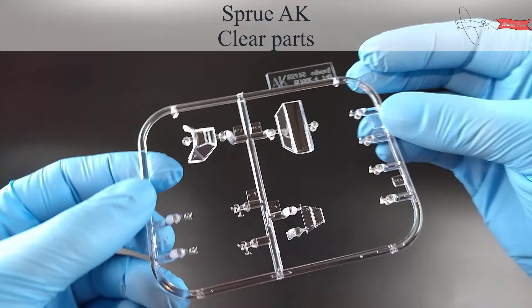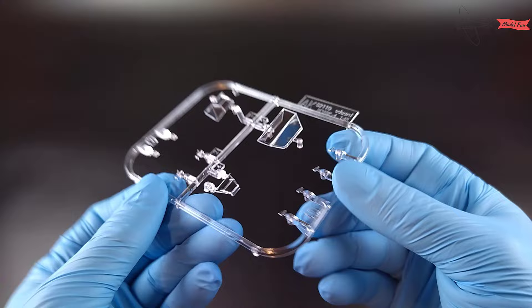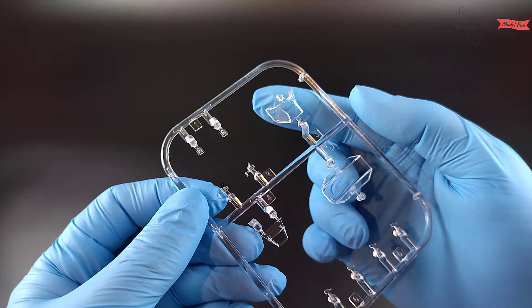Okay, let's have a closer look. Sprue AK, it's clear parts for canopy, gunsights, armor plate, wing lights, and a very nice touch from EdArt because all the small elements are doubled.